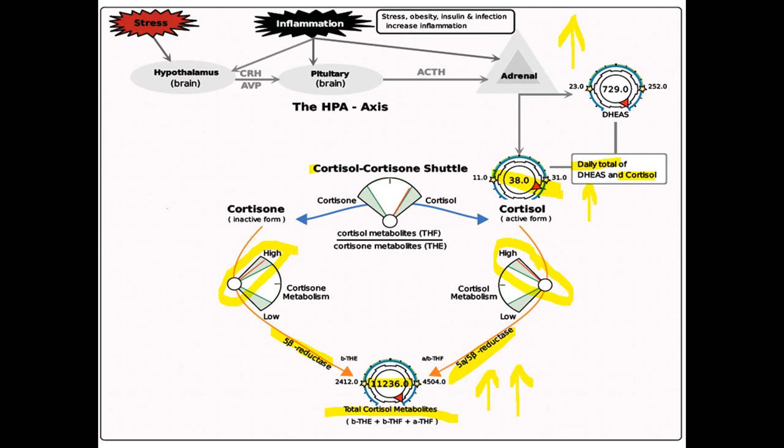To make things worse, the cortisol-cortisone shuttle favors cortisol as well. What that means is in the body, in certain compartments like the kidney, colon, and salivary gland, the cortisol is deactivated to cortisone. Then in the periphery, in the fat cells, muscle, and liver, it's reactivated to the active cortisol.